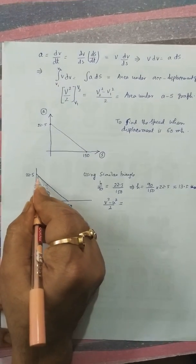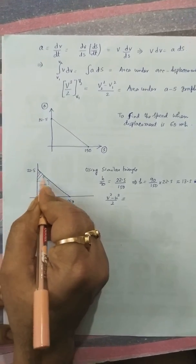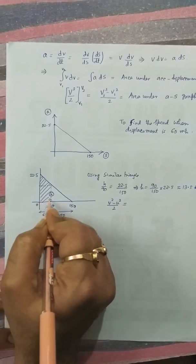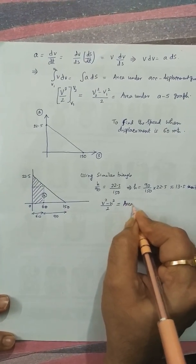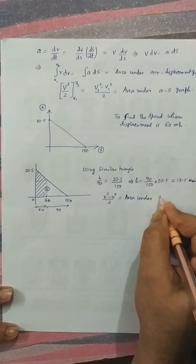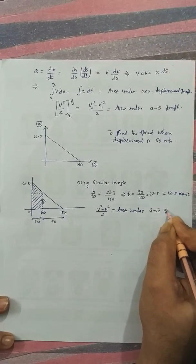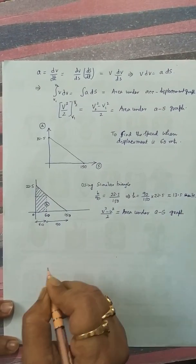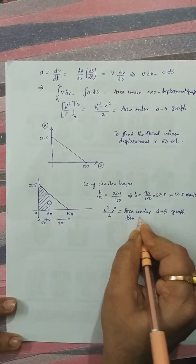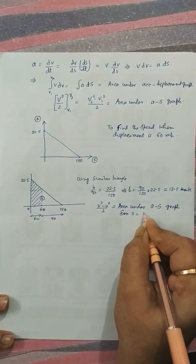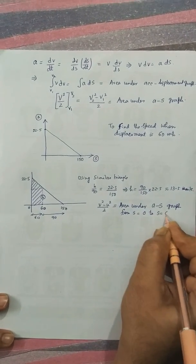Area is area of the trapezium, that is area under acceleration versus displacement graph from s equal to 0 to s equal to 60.